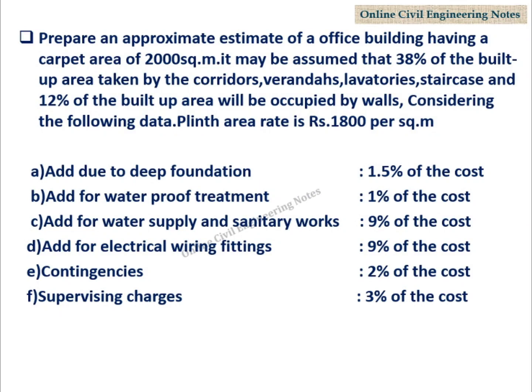Prepare an approximate estimate of an office building having a carpet area of 2,000 sqm. It may be assumed that 38% of the built-up area is taken by the corridors, verandas, lavatories, staircases, and 12% of built-up area will be occupied by walls.